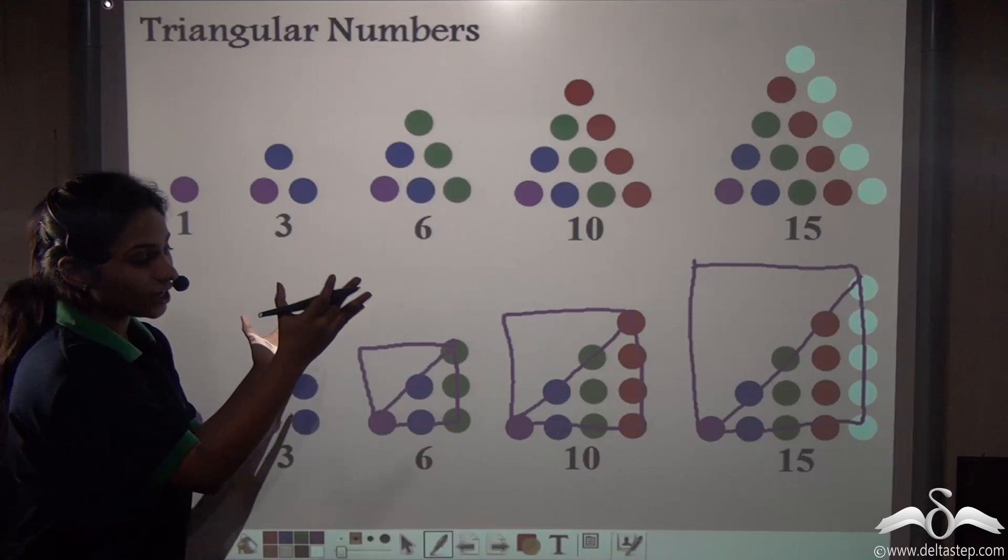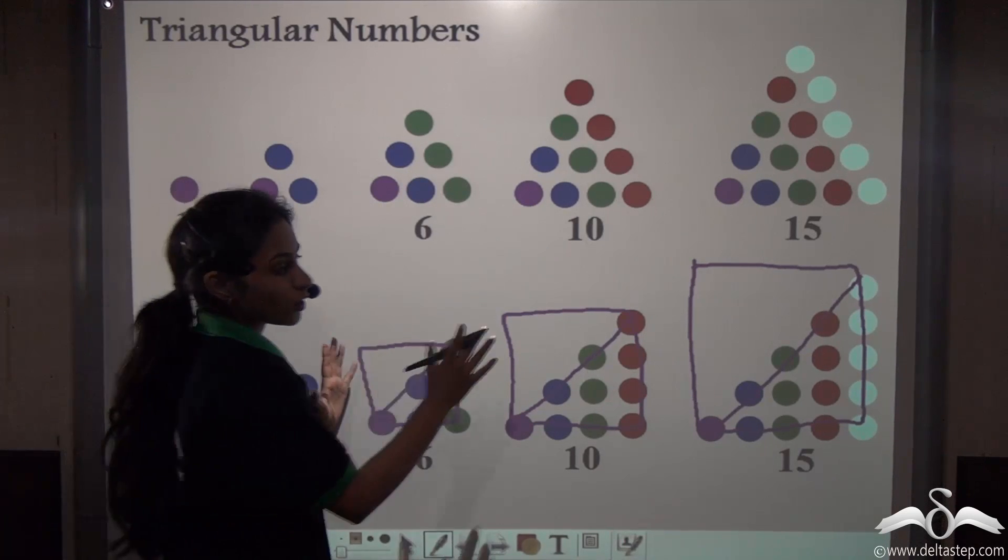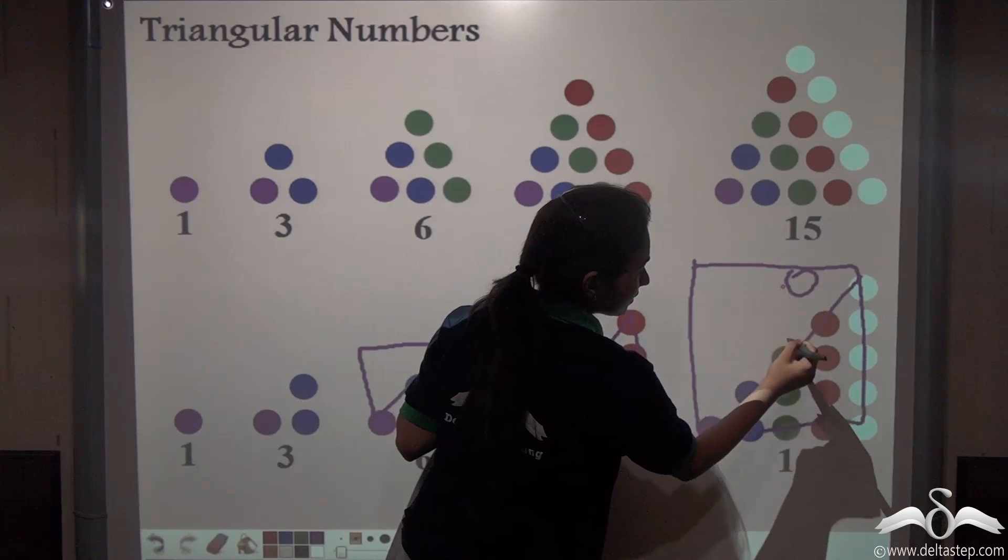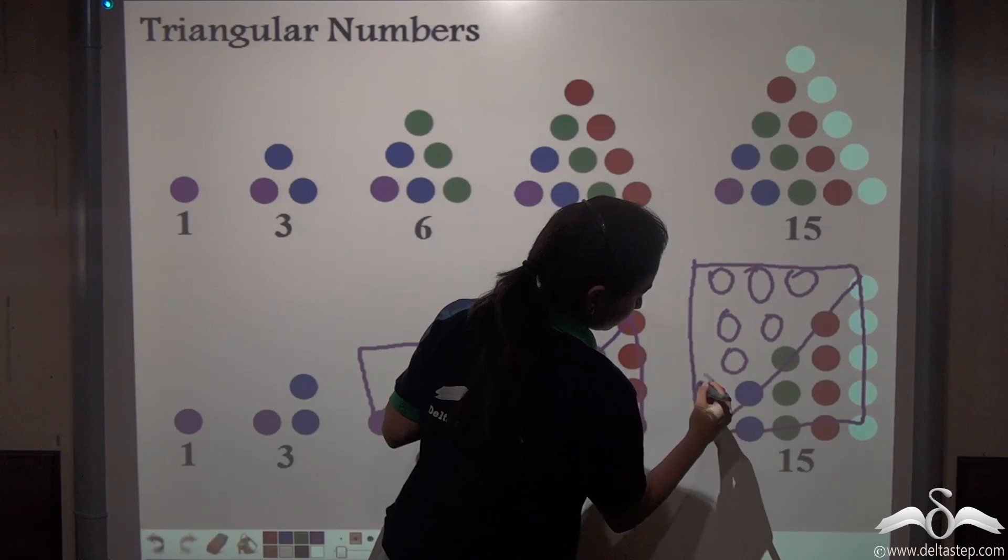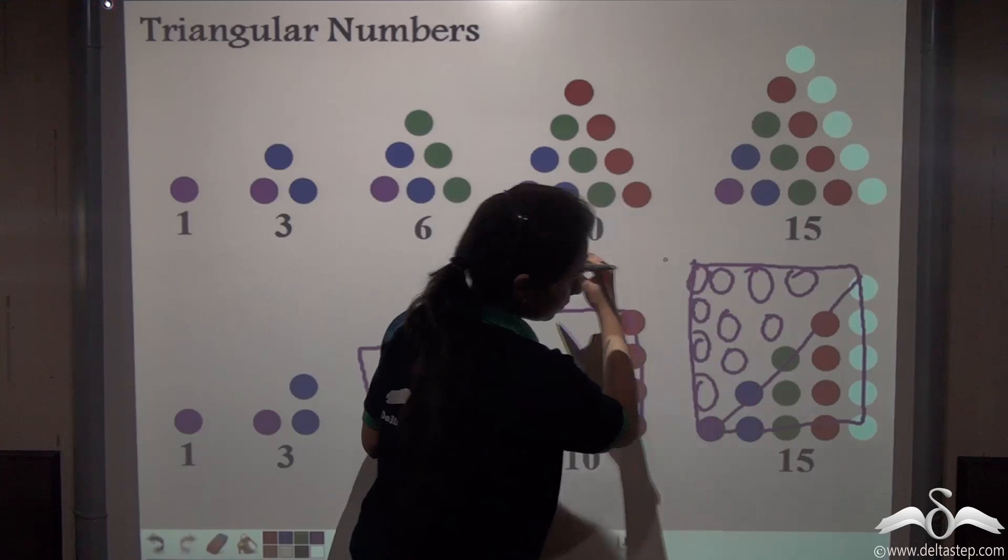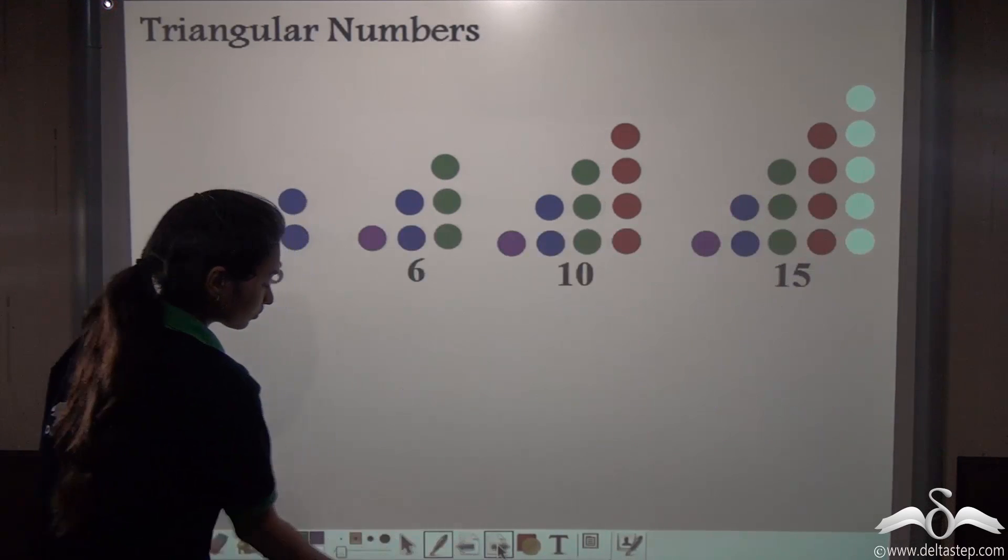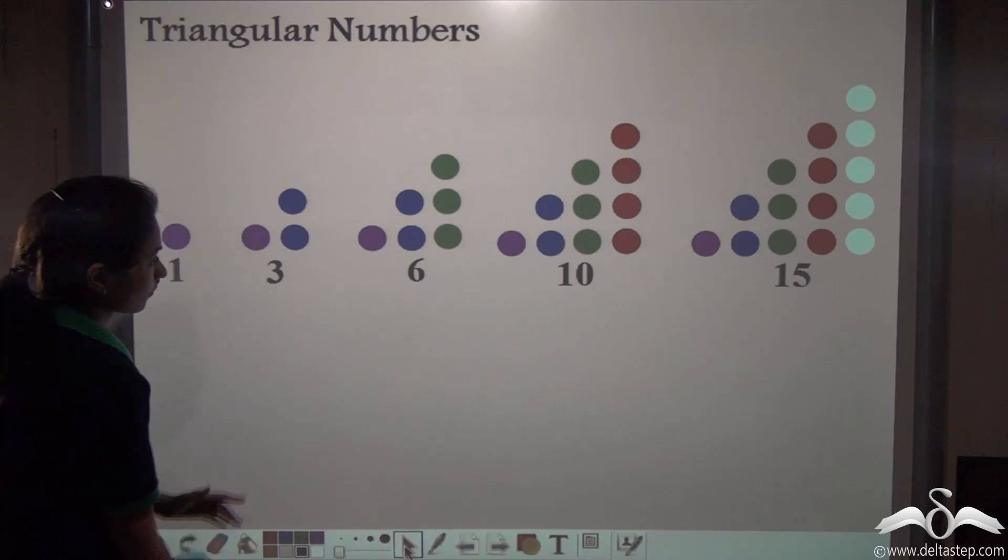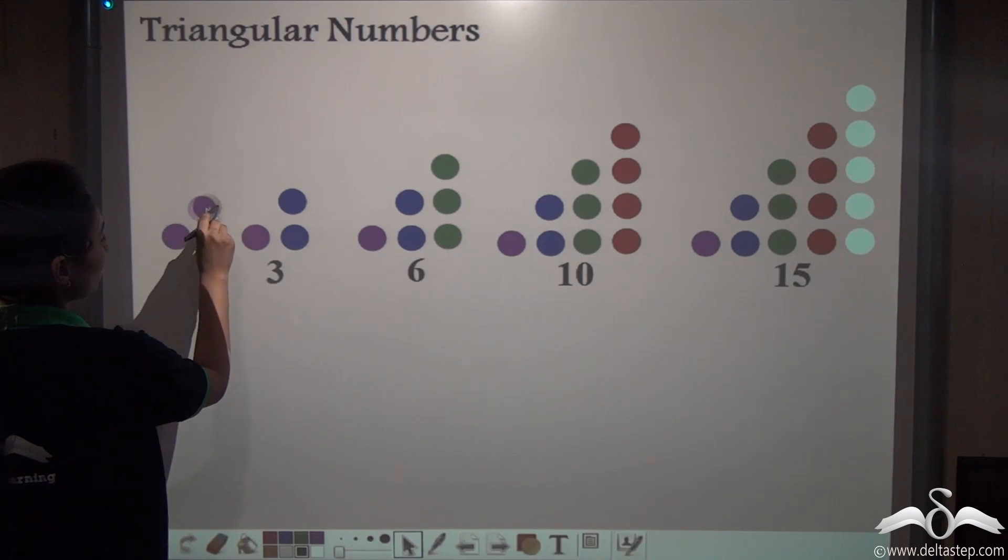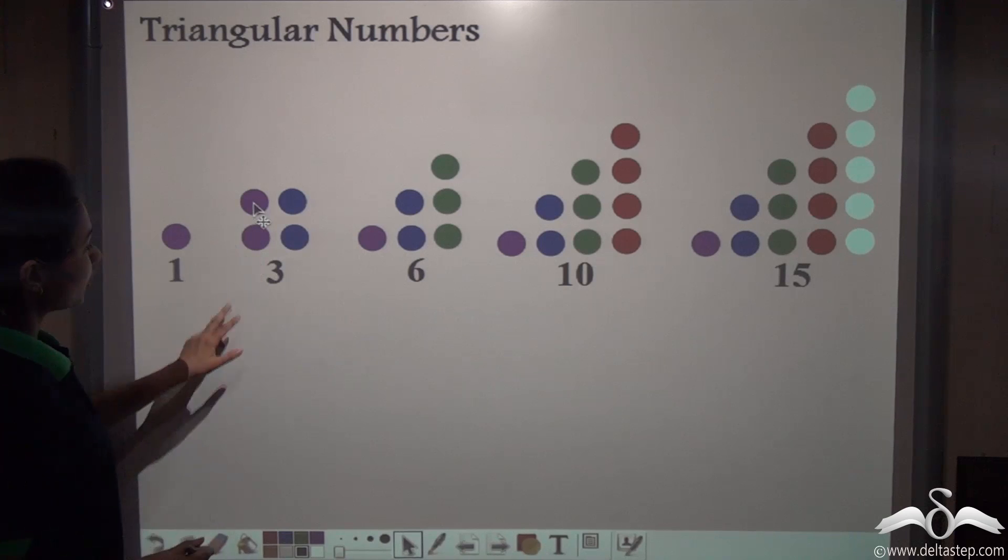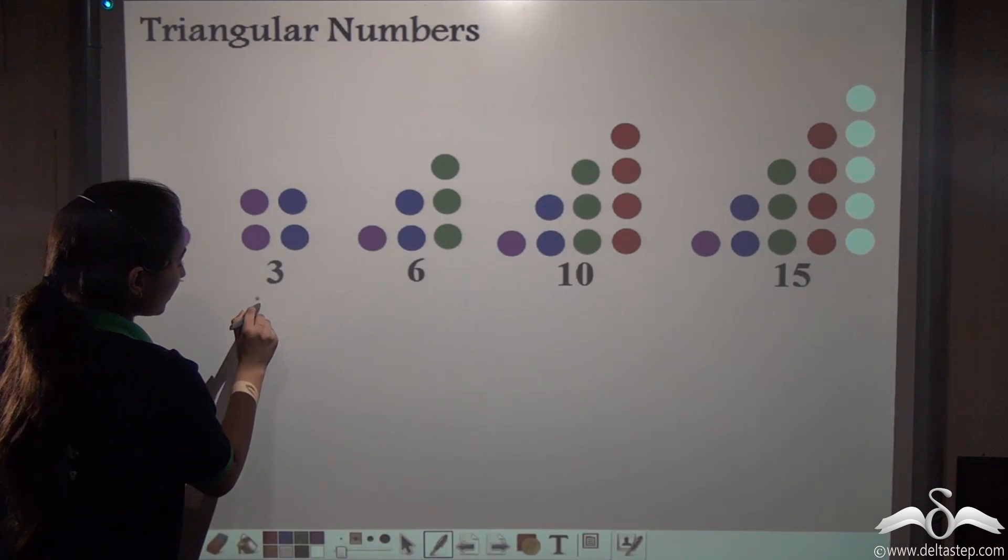And adding any two of these consecutive triangular numbers, we get a square. So, a square will be what? Something like this. Well, does this happen? I will show you. First of all, adding one and three. Add this one with three. See, you get a perfect square. This is how you get four.